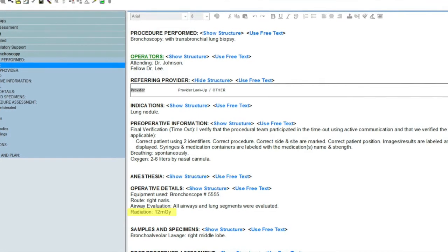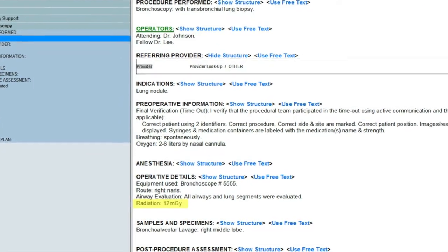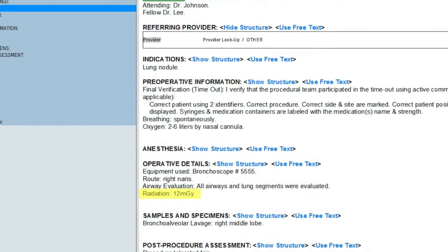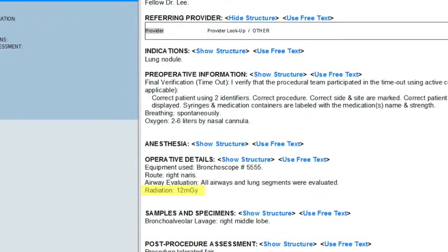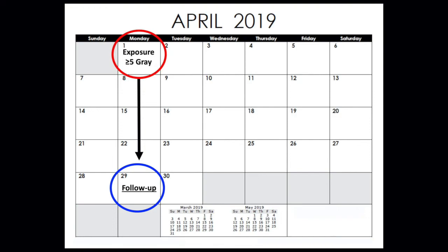After you're done, be sure to document the radiation exposure. Your institution will have a system for recording the radiation dose of each procedure. This may be in the procedure note or in a separate log. If the radiation dose exceeds 5 gray, you should instruct the patient to monitor for skin changes or signs of damage and arrange to see the patient in clinic four weeks later.